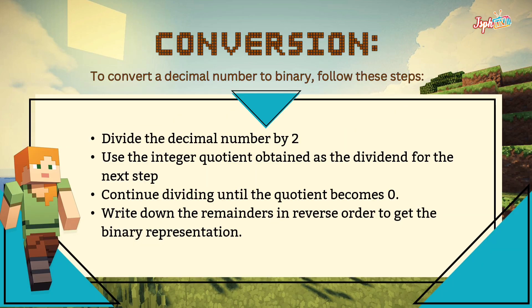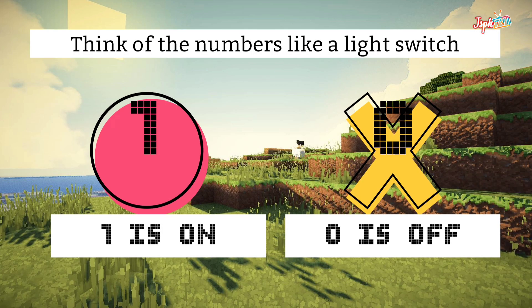To convert a decimal number to binary, follow these steps. Divide the decimal number by 2. Use the integer quotient to obtain a dividend for the next step. Continue dividing until the quotient becomes 0. Write down the remainders in reverse order to get the binary representation. Think of binary like a light switch: 1 is on, 0 is off.